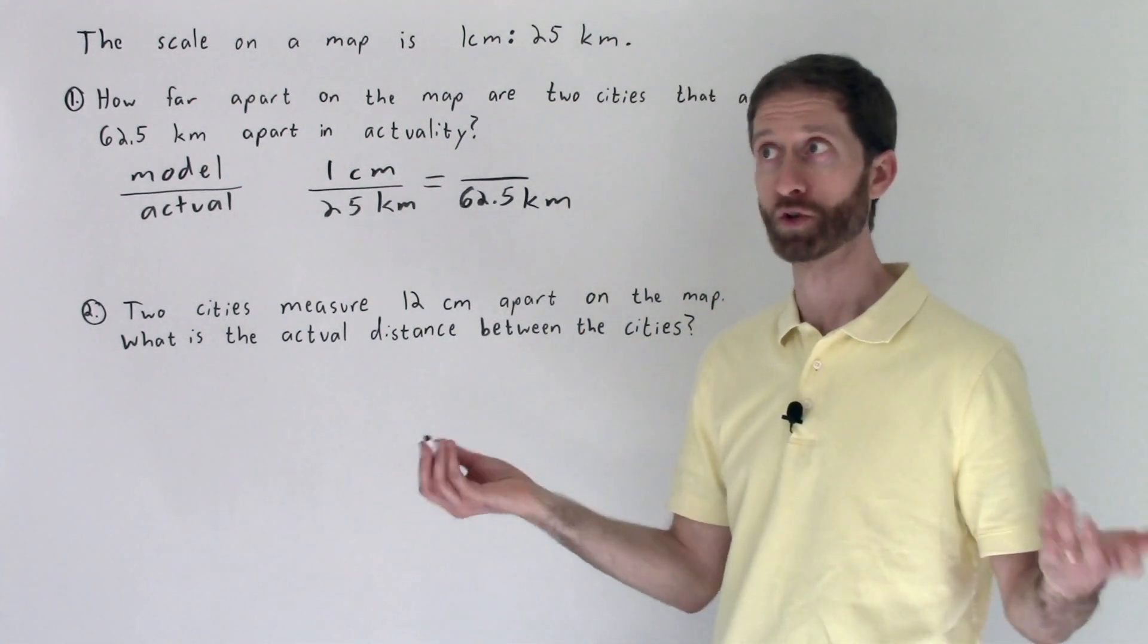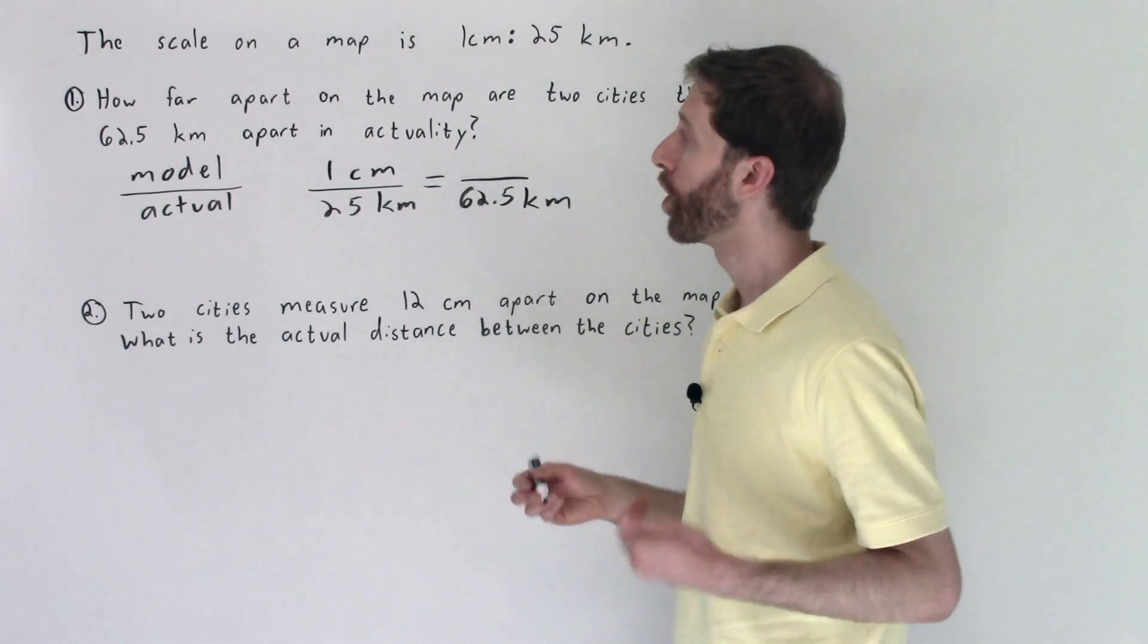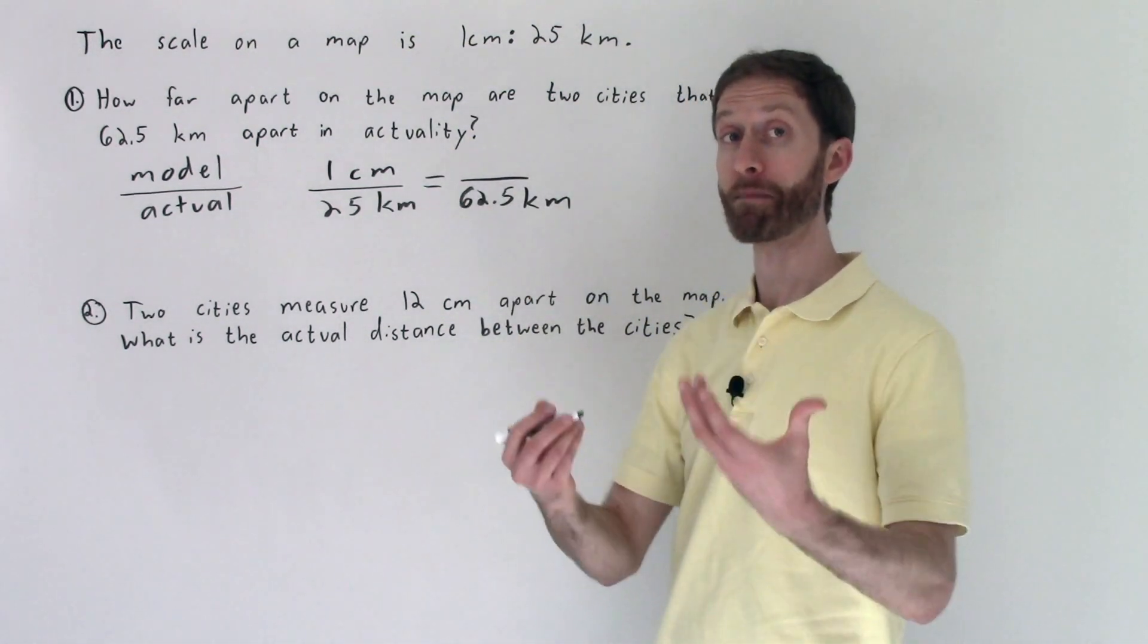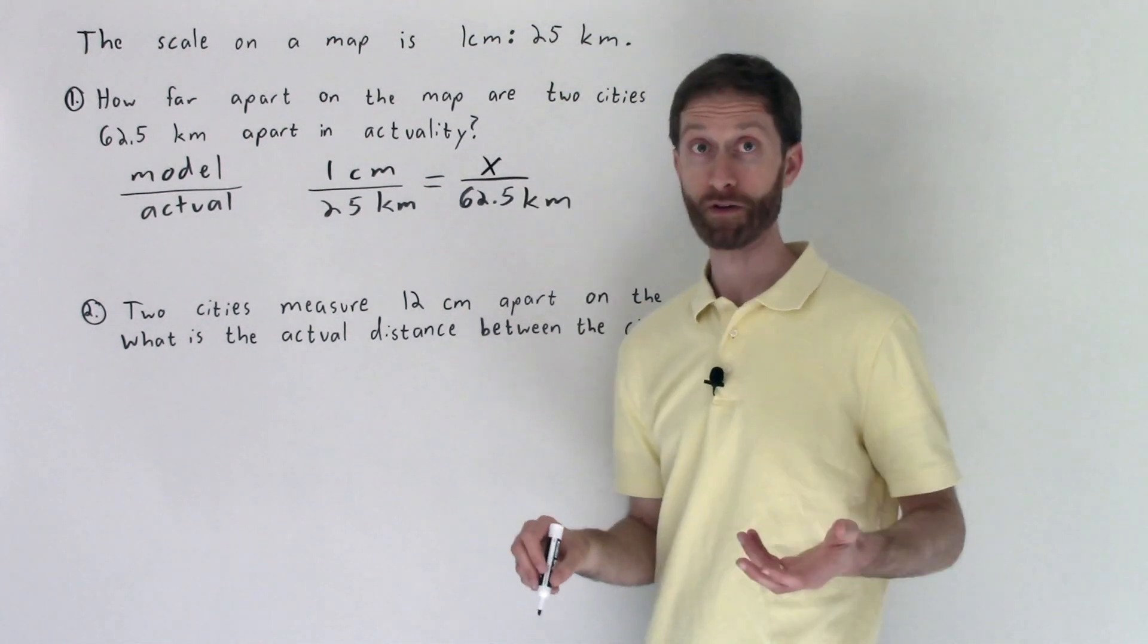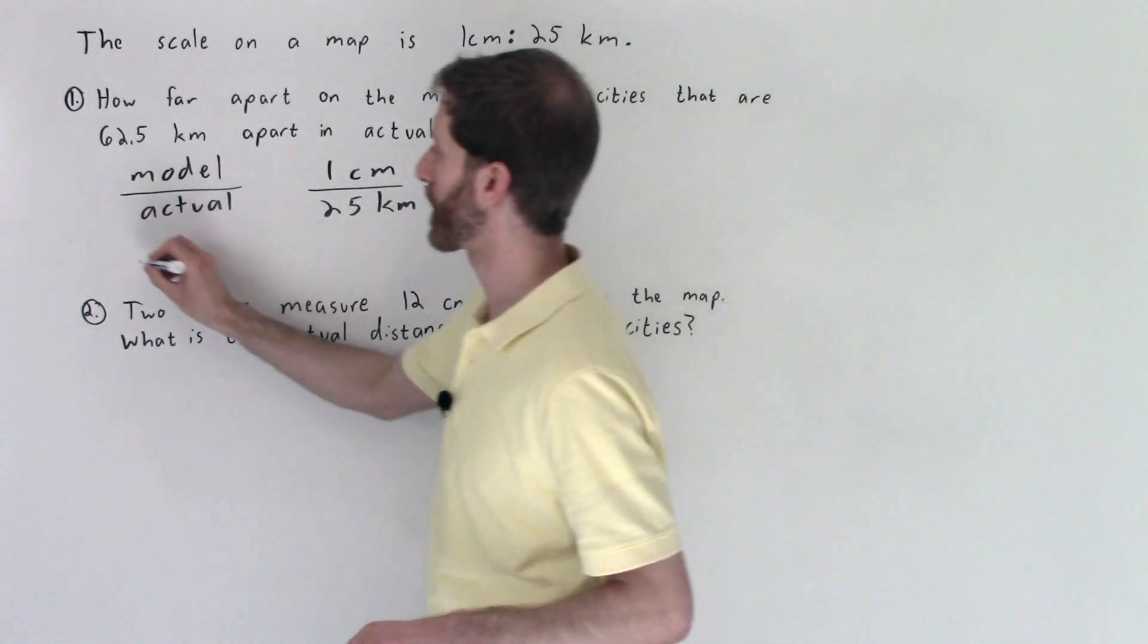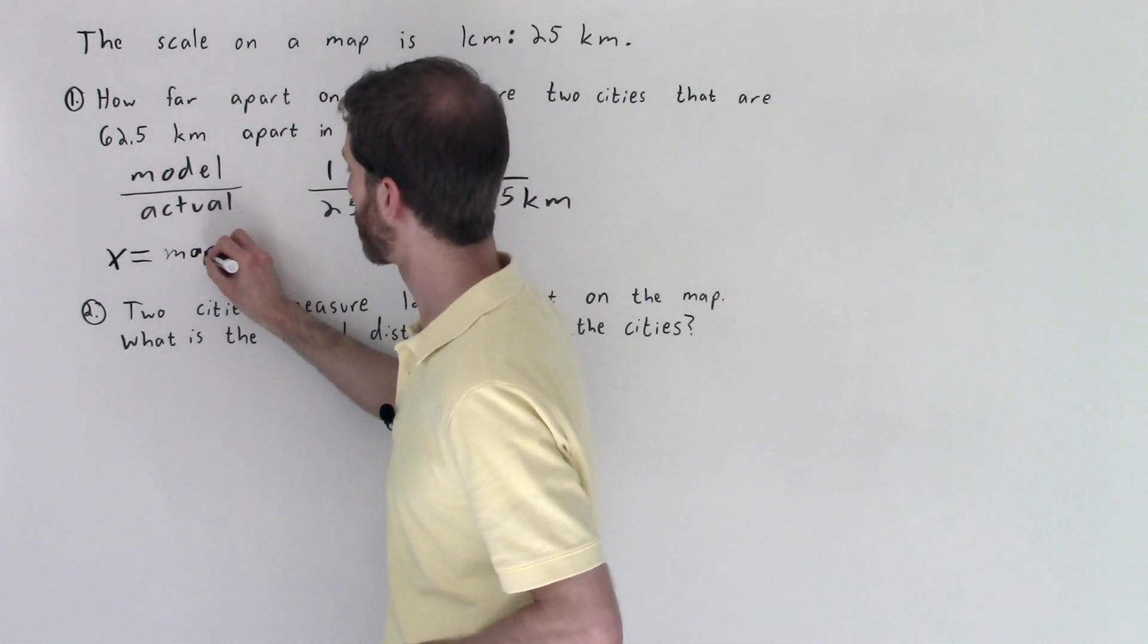We're using the same map with that rate. Now we don't know what the model amount or the map amount is. That's what we're being asked. I'm going to call that x. Now if you want to be fancy you can define your variable and say x equals the map distance.